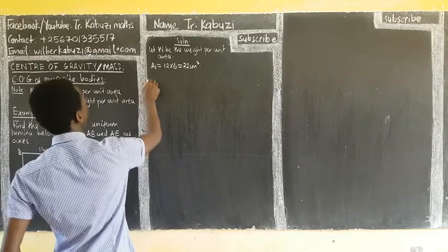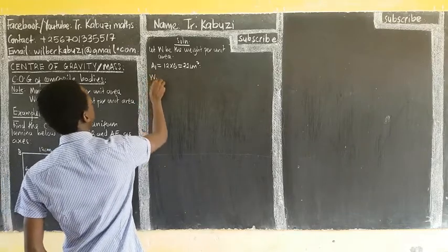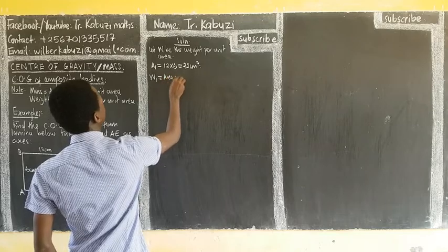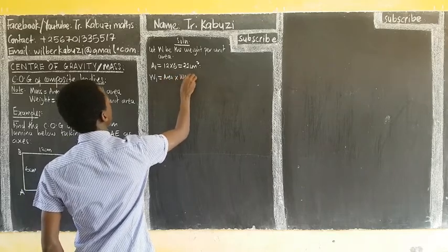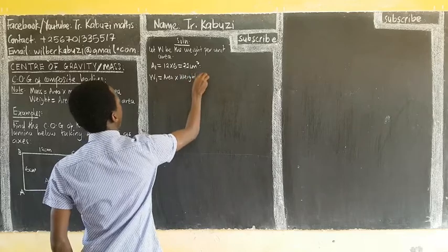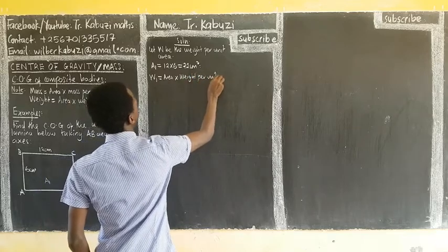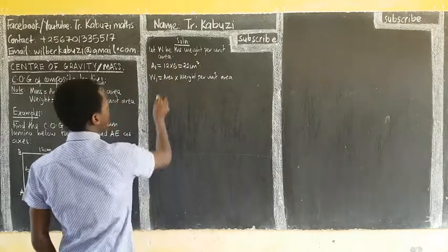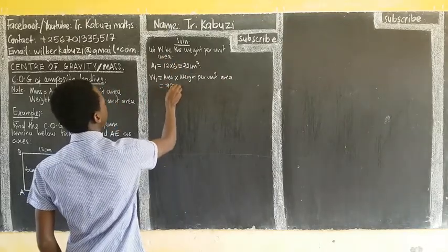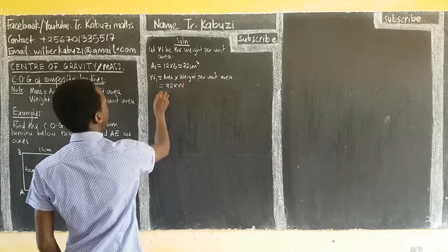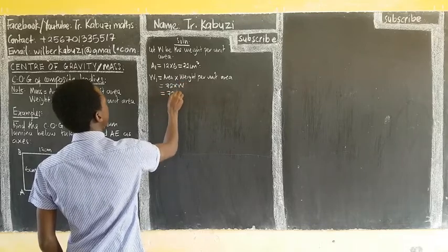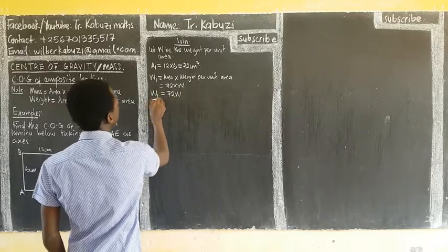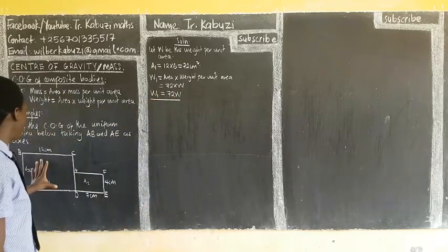Now we can also get the weight for the first section. To get the weight, we take the area times the weight per unit area W. So our area is 72, times W, giving us W1 = 72W. This is the weight of the first body.